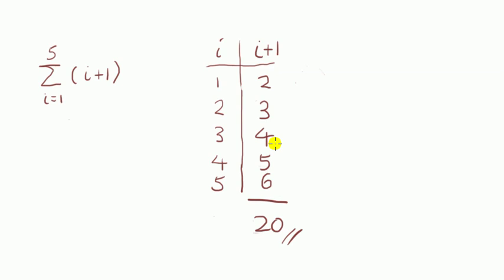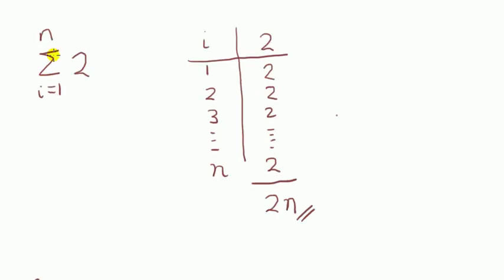Let's consider another one. Here we have add from i is one to n. n is a number we don't know so we'll just call it n without the term two. Here's the table. i here goes from one to n.